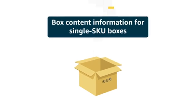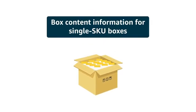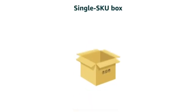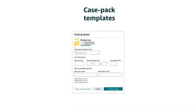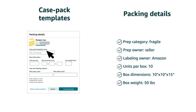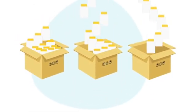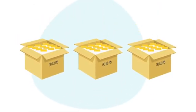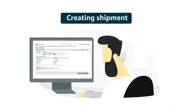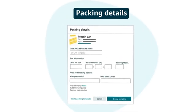For inventory shipped in boxes containing multiple units of the same SKU, also known as single SKU boxes, you provide box content information through reusable case pack templates. These templates contain information on how your SKUs are prepped, labeled, and packed, and are ideal for SKUs shipped with the same box configuration shipment to shipment. Each time you create a shipment in Send to Amazon, the box content information is automatically identified from your case pack template.